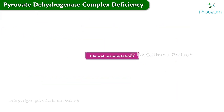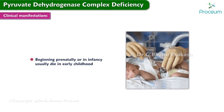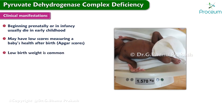A backup of substrates also develops; this backup includes lactate and pyruvate and results in a lactic acidosis. Now let's talk about how this manifests in a clinical setting. Patients with PDCD beginning prenatally or in infancy usually die in early childhood. Babies with PDC deficiency may have low APGAR scores, measuring a baby's health after birth. A low birth weight is also common.